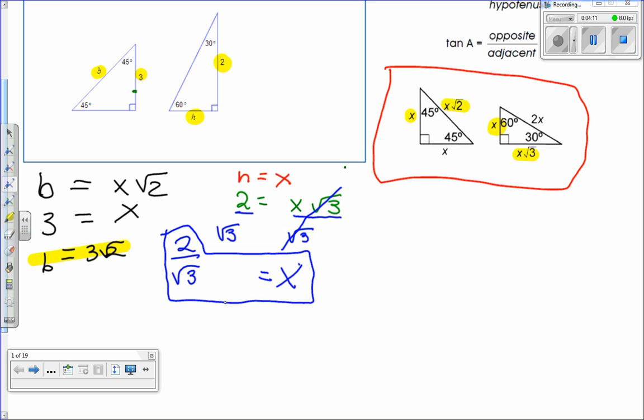Which this would be our answer, but we're going to want to simplify it. That is what that side length is equal to, but the problem here is we have a radical in the denominator. So we don't want that. In order to get rid of this radical in the denominator, we're going to rationalize the denominator.